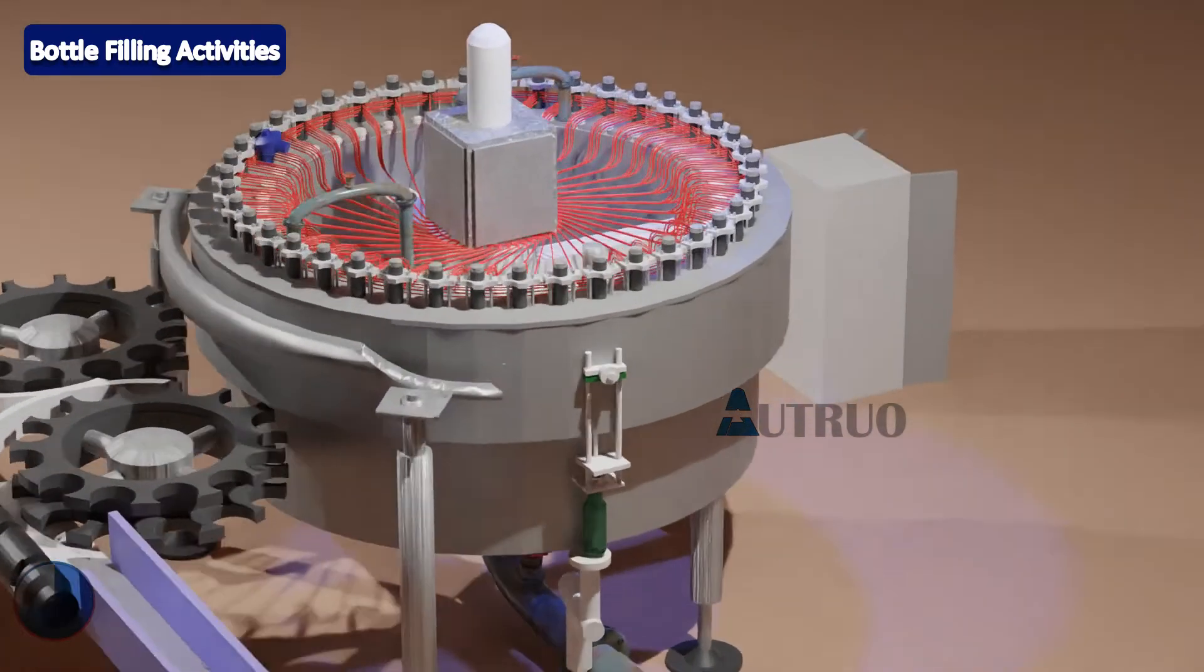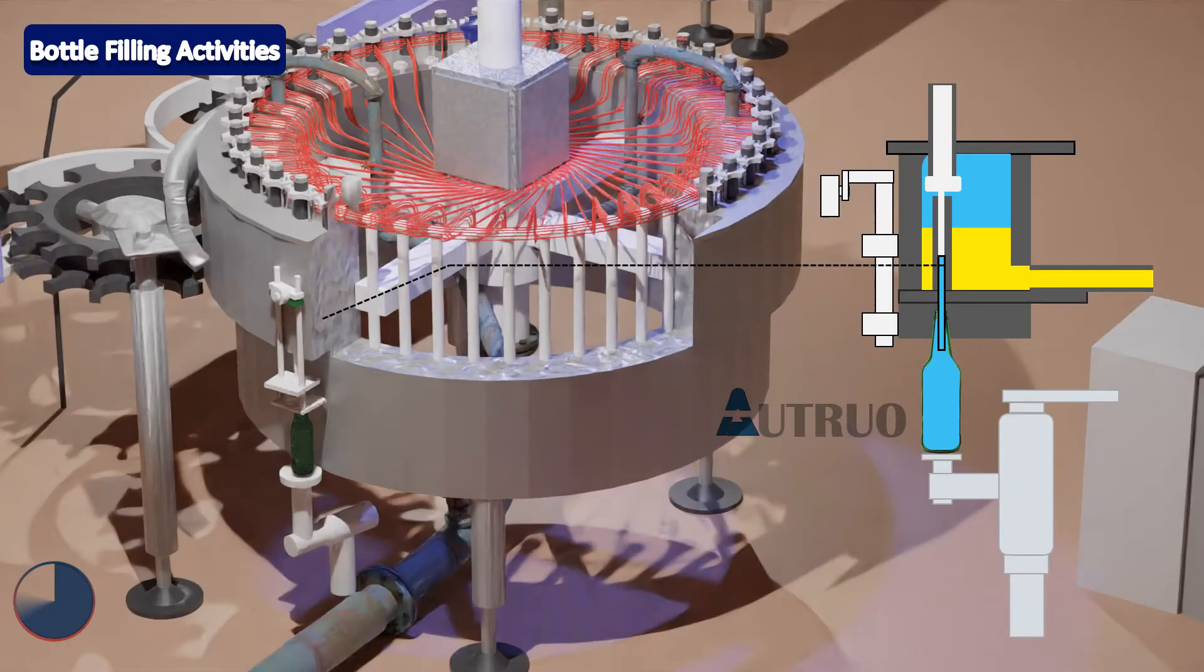When the filler rotation is from 5 degrees to 10 degrees, the PLC will use compressed air to activate the CO2 valves. This will allow the bottle to be pressurized with CO2.